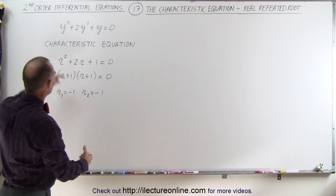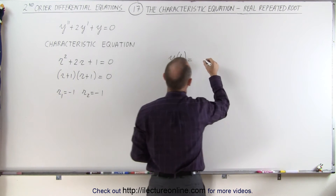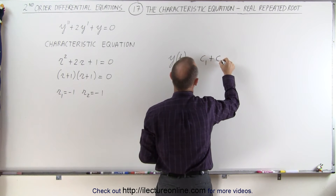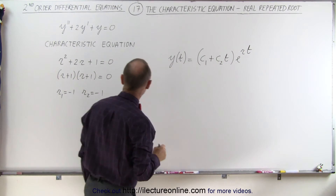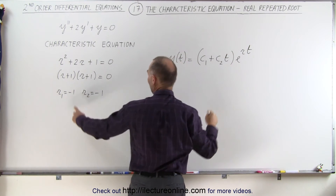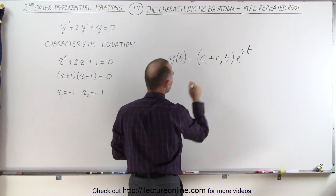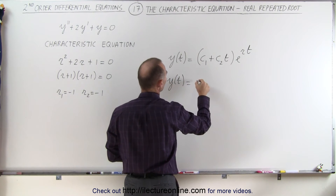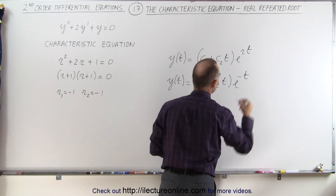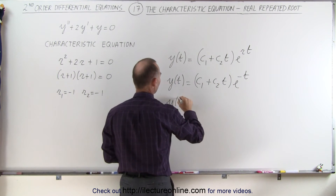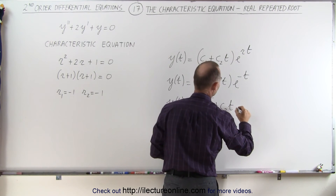If we want to turn that into the general solution to this differential equation, it looks as follows. We have y as a function of t equal to c1 plus c2 times t, times e to the root times t. The repeated root is negative 1 in this case. So this becomes y of t equals c1 plus c2 times t, times e to the minus t. Expanding, y of t equals c1 e to the minus t plus c2 times t times e to the minus t.